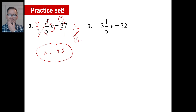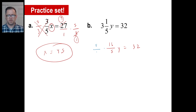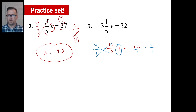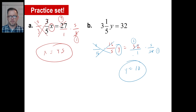If you haven't done B, go ahead and pause. For B: 3 and a fifth y — let's go improper fraction. 5 times 3 is 15, plus 1 is 16. So 16 fifths y is equal to 32. Immediately, you know to multiply both sides by 5 over 16. Those cancel, we have our y. 16 goes into 32 twice, so y is equal to 2 times 5. y equals 10.